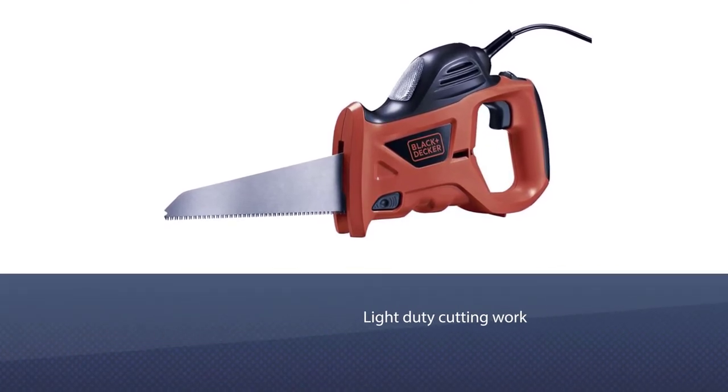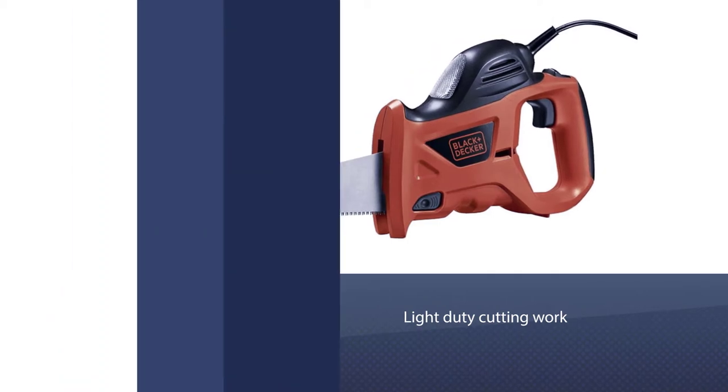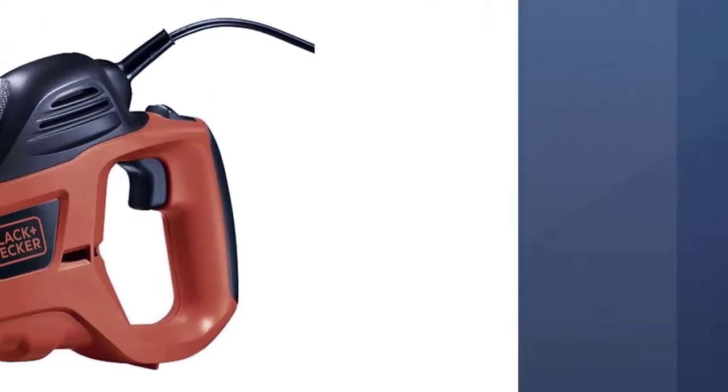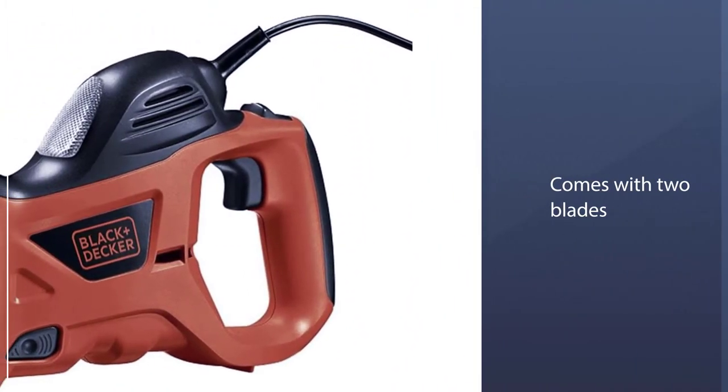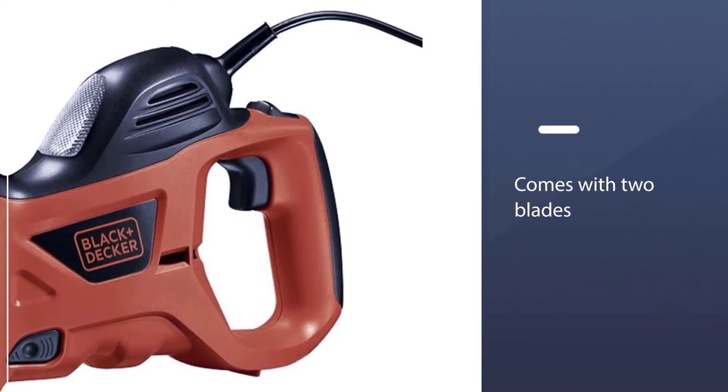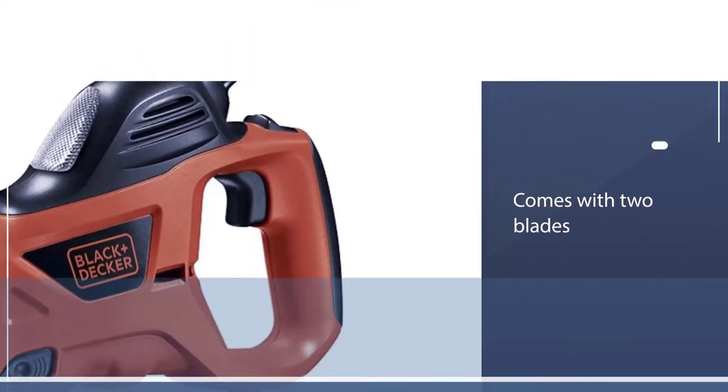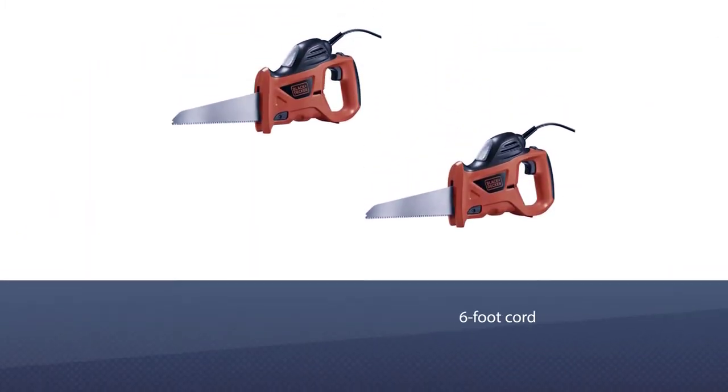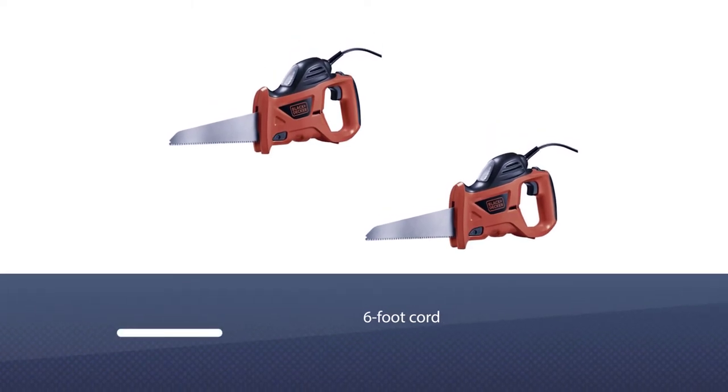The PHS550B comes with two blades—one for cutting wood, one for cutting metal—and a carrying bag. The six-foot cord will give you plenty of room to move around with this lightweight and surprisingly durable saw.